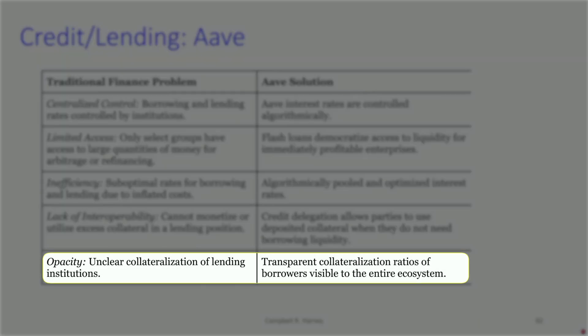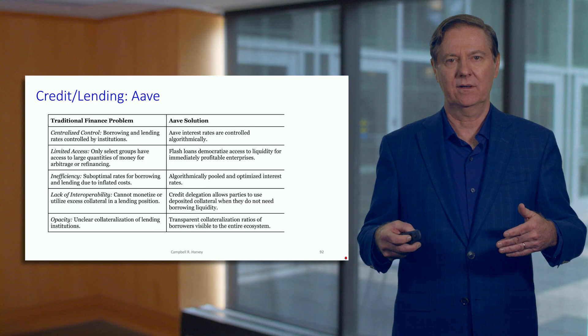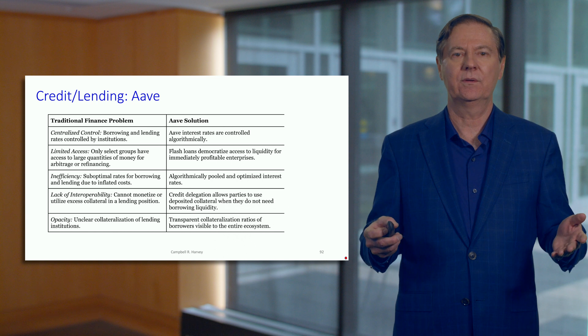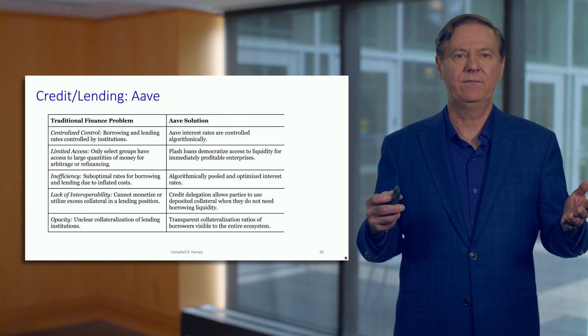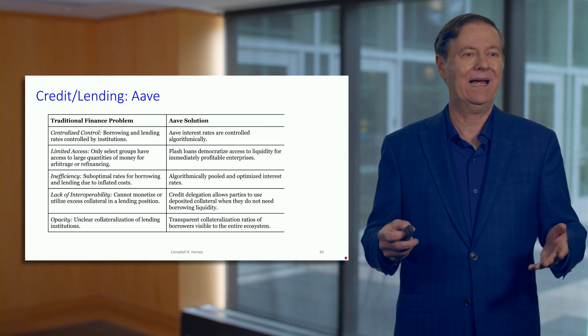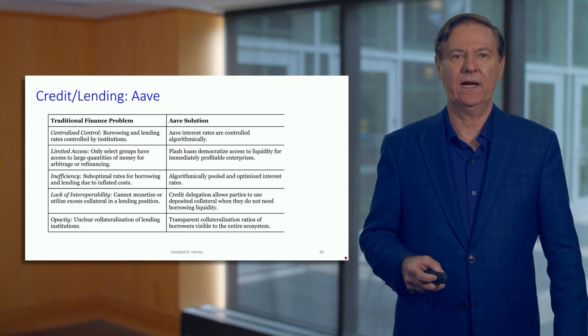Transparency is another key advantage. Everything is open — anybody can see what is happening. The parameters are visible, the balances are visible, the collateral is visible, and all of the steps are visible. For the flash loan example I showed, you can literally click on Etherscan and see all of the steps. It's very clear — this is a very transparent mechanism, as is all of decentralized finance.